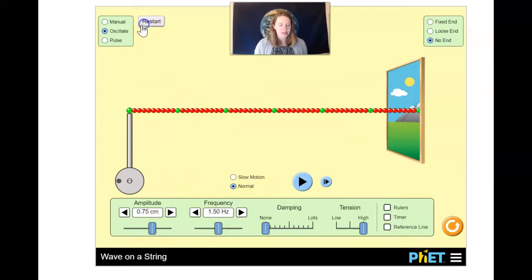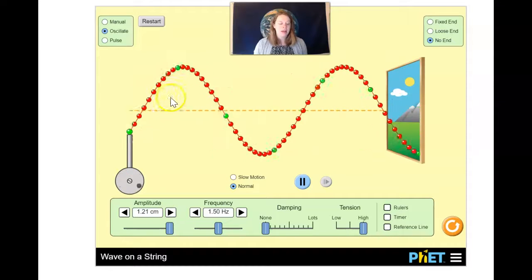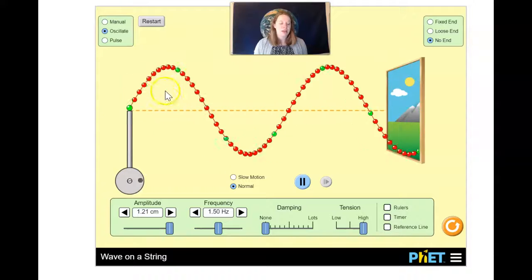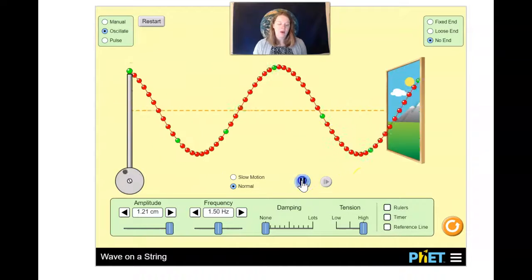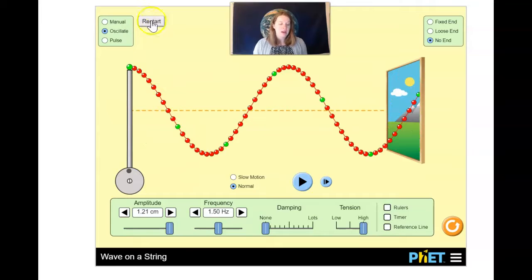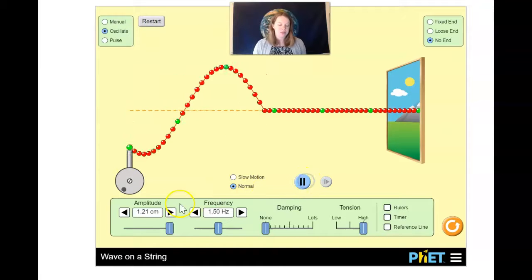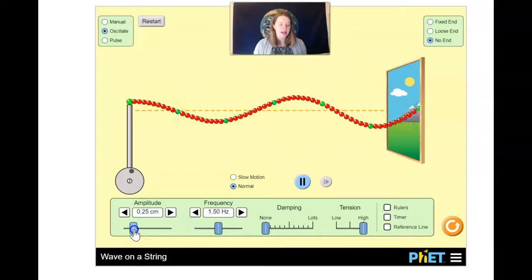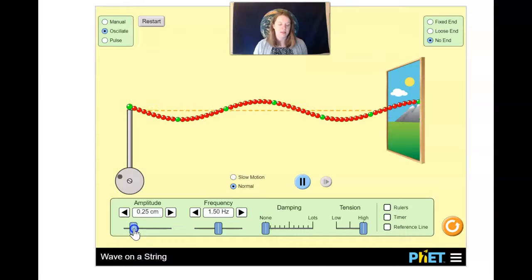So if I restart this, I can make my amplitude really big. So notice what happens when my amplitude is really big. The distance that each maximum and each minimum are from this middle line where the oscillation started is greater. So as I decrease my amplitude, I can see that that kind of height from equilibrium line is smaller.